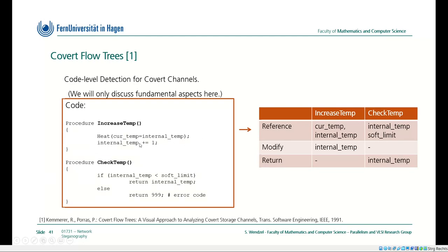The important thing is the variables used. We increase the internal temperature by incrementing its value. The other procedure, check temperature, first checks whether the internal temperature is within or below some soft limit. If that's the case, the internal temperature is returned; otherwise, some error code is returned — for instance, if the temperature is unreasonably high. We then build a matrix similar to the SRM. We have the procedures — increase temperature and check temperature — listed on top, and we list the variables or attributes that they reference, modify, and return. Increase temperature references current temperature and internal temperature, while it modifies internal temperature by incrementing it. Check temperature also returns internal temperature.